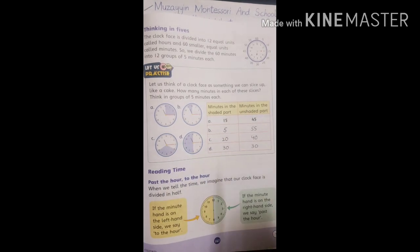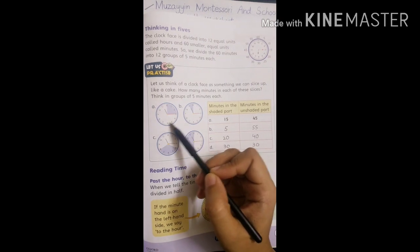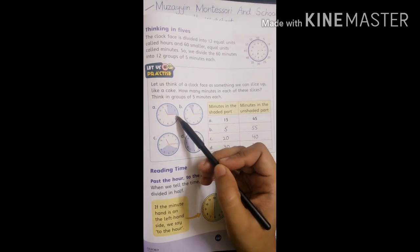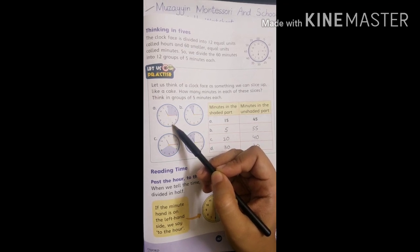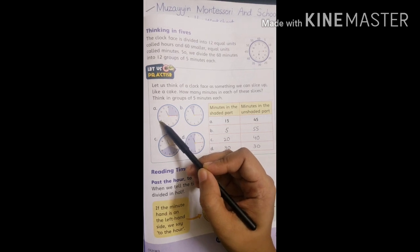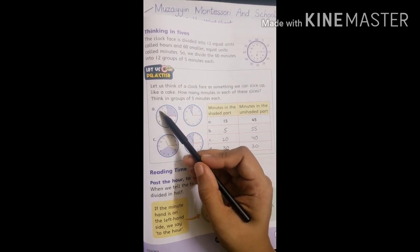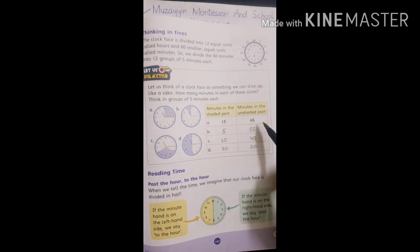Minutes in the unshaded part. We can count: 3 to 4 is 5 minutes, 4 to 5 is 10 minutes, then 15, 20, 25, 30, 35, 40, 45. The unshaded part is 45 minutes.